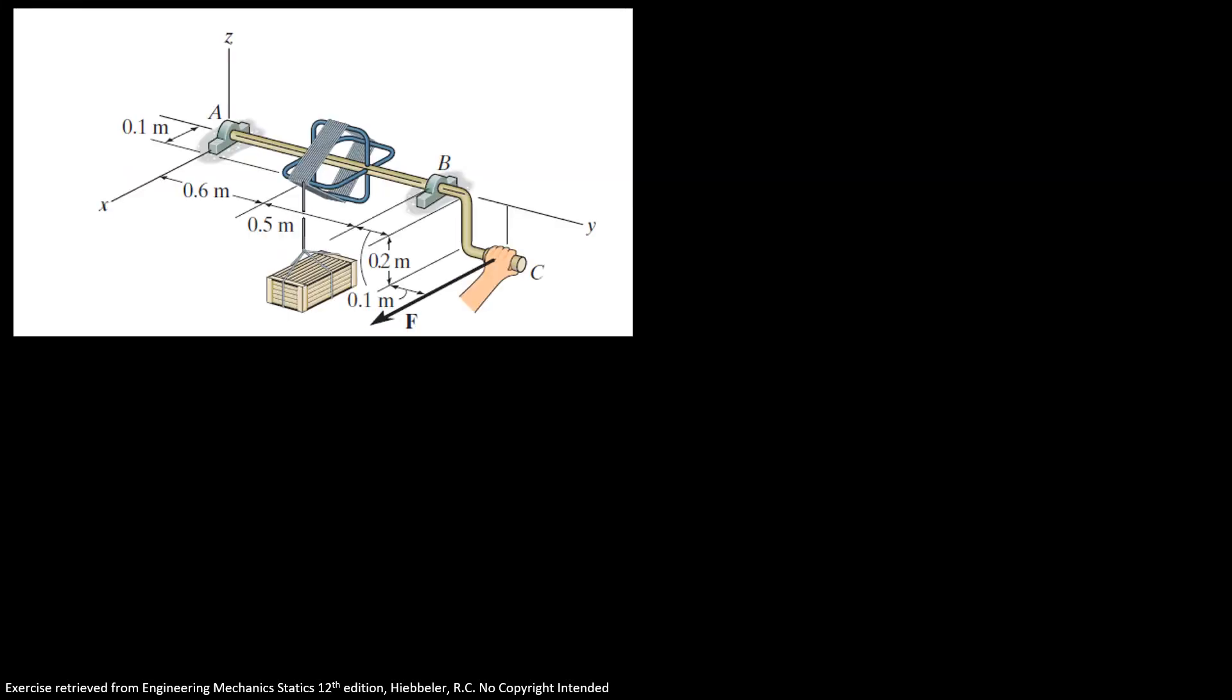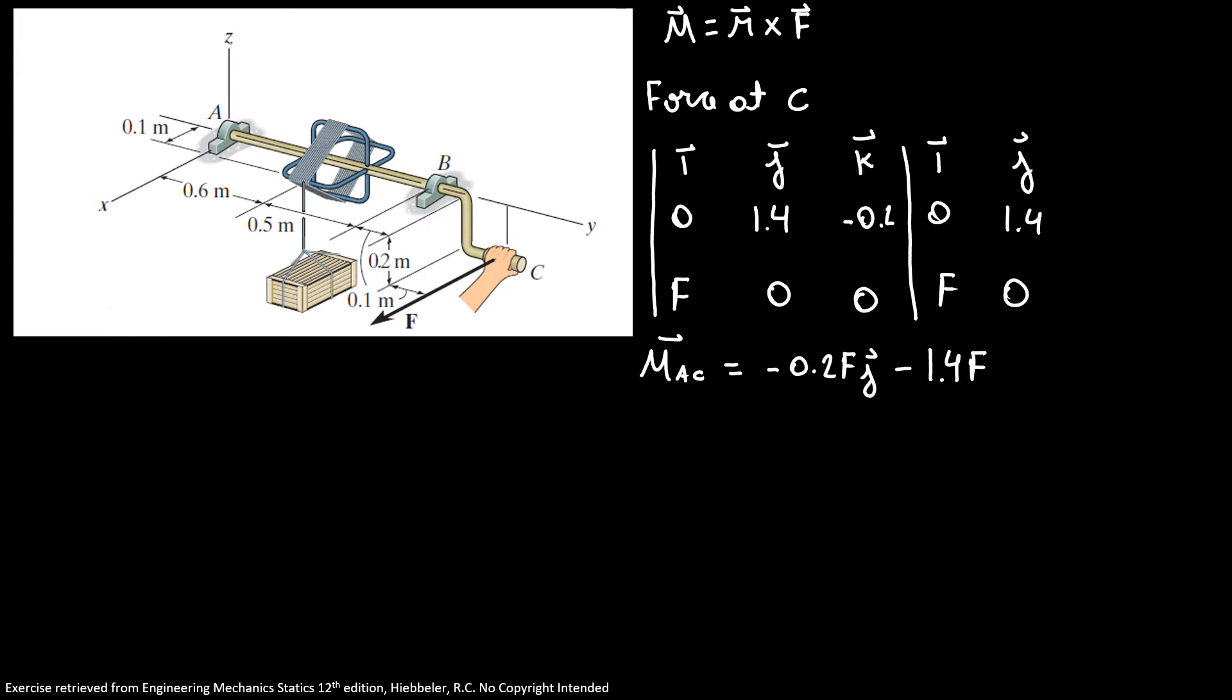Now we're going to find our moment equations, which equal the cross product between the arm length and the force. First, for force at C, I'm going to build my matrix with i, j, and k. Our distance is 0, 1.4, and -0.2. Here we have F, 0, and 0. Building our matrix, we get moment AC equals -0.2F in j direction minus 1.4F in k direction.